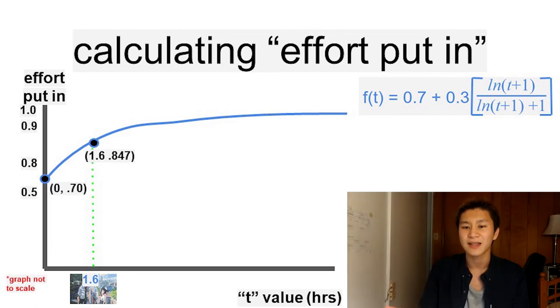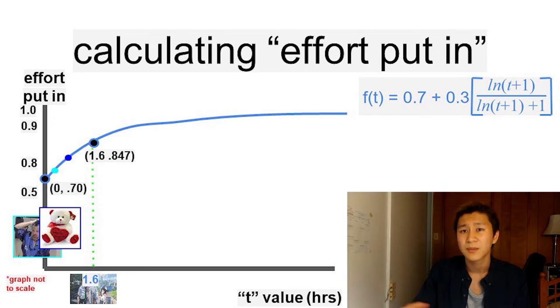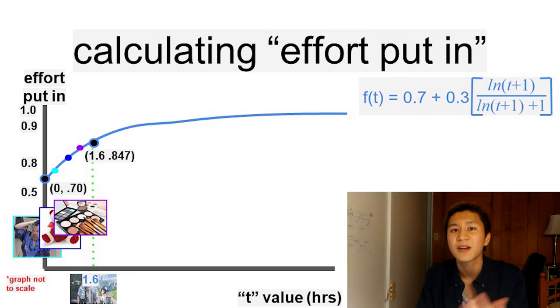It looks something like this. As you're cleaning yourself up, buying presents, putting on makeup, if you're a girl, or if you're a guy, you do you. As you're doing these things, you're raising up your level of effort until you reach what's expected. In this case, at least 84.7%.